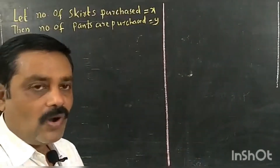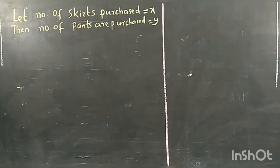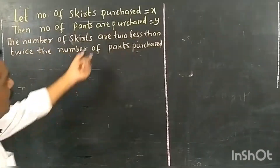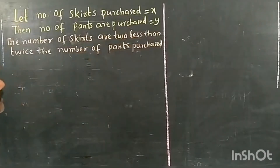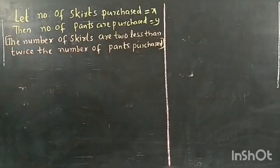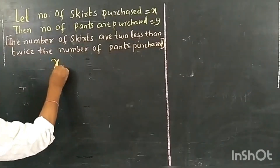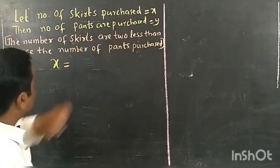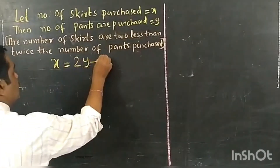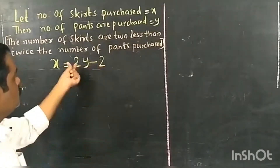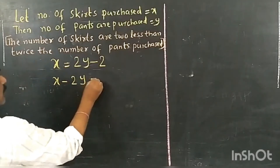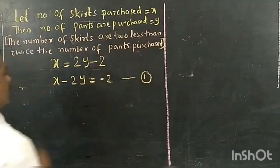Let us check the condition given between skirts and pants. The number of skirts are two less than twice the number of pants purchased. So the number of skirts X is equal to twice the number of pants, that is 2Y, minus two. Shifting 2Y to the left side, we get X minus 2Y equals minus 2, which is the general form of a linear equation — this is our first equation.